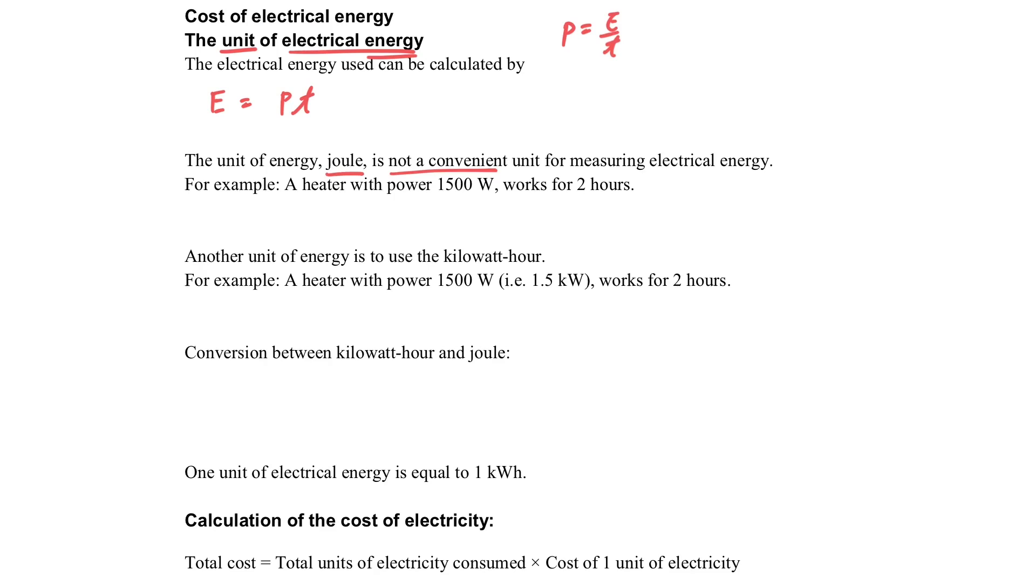However, joules are not convenient for measuring electrical energy. For example, an electrical heater with power of 1500 watts working for two hours produces a very large value in joules. Even a normal heater working for such a short period gives us a very large number, which is not convenient.